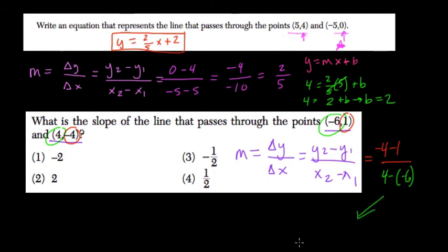and what do we get? Negative 4 minus 1, that's negative 5. 4 minus negative 6 is 10, right? Because we add that 6, and we get negative 1 half, or choice 3.